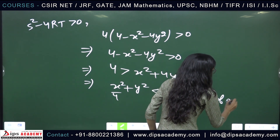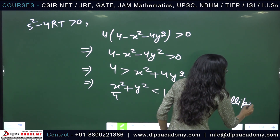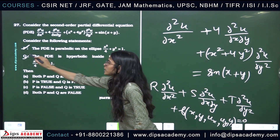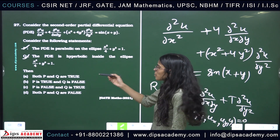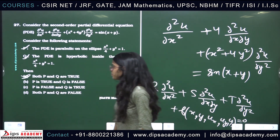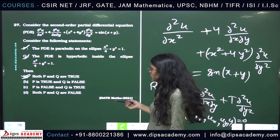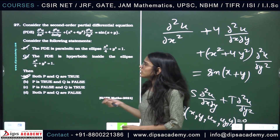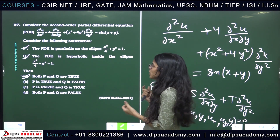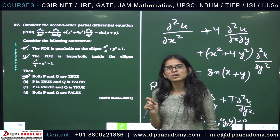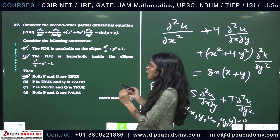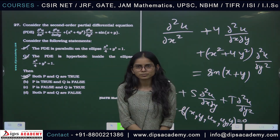So inside the ellipse, the PDE is indeed hyperbolic, meaning Statement Q is also true. Therefore option A is correct — both P and Q are true. This GATE 2021 question asks us to classify the PDE as hyperbolic, parabolic, or elliptic using the discriminant S² − 4RT. Thank you.